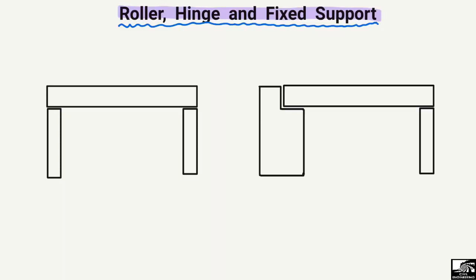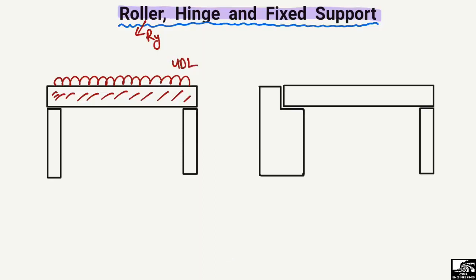Now to explain this practically, starting with the roller support: here is a beam with a uniformly distributed load acting on it. Due to the vertical load, there are two supports providing reactions. We can see there is no reinforcement going from the column into the beam — no monolithic connection — just a support provided to the beam. This kind of support, which can only resist the vertical load, is known as the roller support.